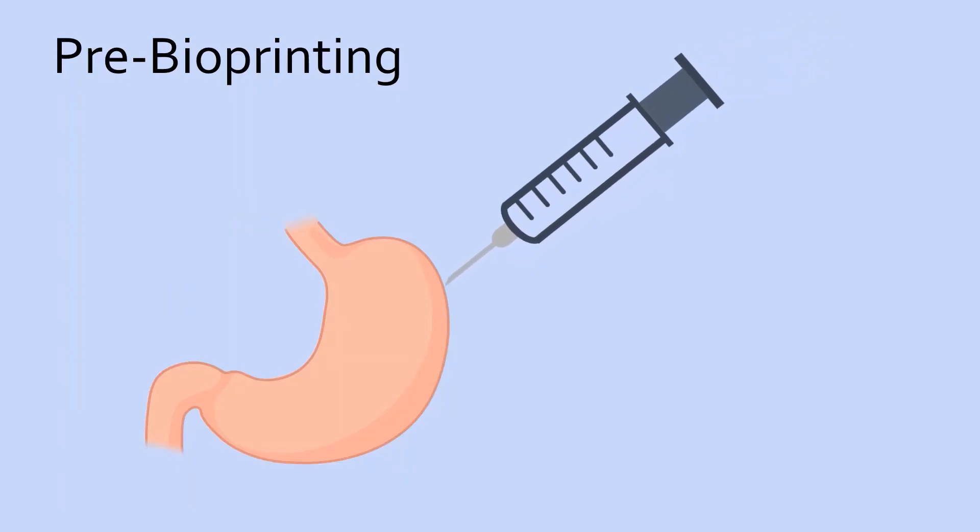Cells are then isolated and extracted from an organism, which is often the recipient of the product, in order to create bioink.